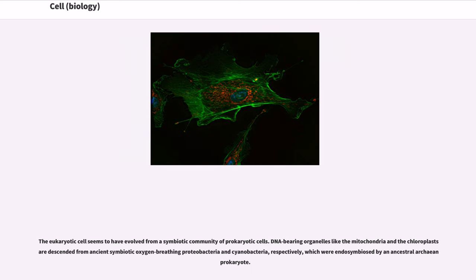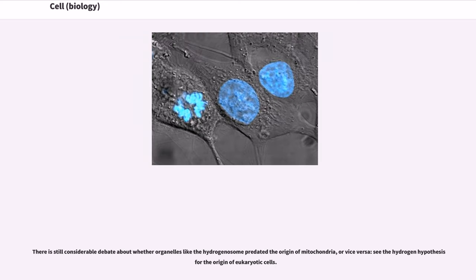The eukaryotic cell seems to have evolved from a symbiotic community of prokaryotic cells. DNA-bearing organelles like the mitochondria and the chloroplasts are descended from ancient symbiotic oxygen-breathing proteobacteria and cyanobacteria, respectively, which were endosymbiosed by an ancestral archaean prokaryote. There is still considerable debate about whether organelles like the hydrogenosome predated the origin of mitochondria, or vice versa, see the hydrogen hypothesis for the origin of eukaryotic cells.